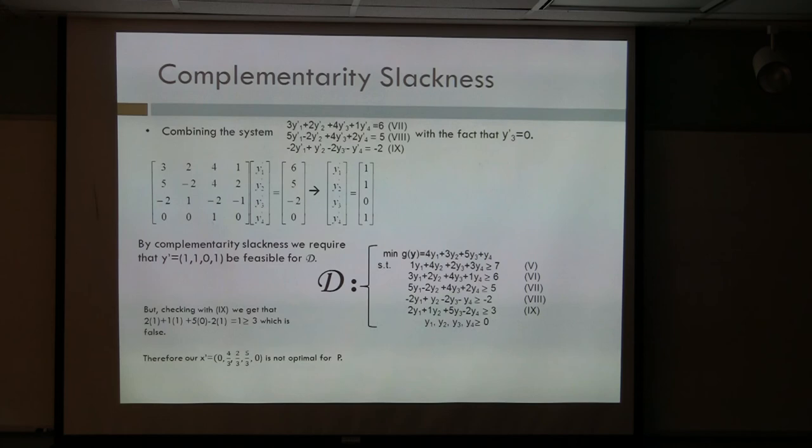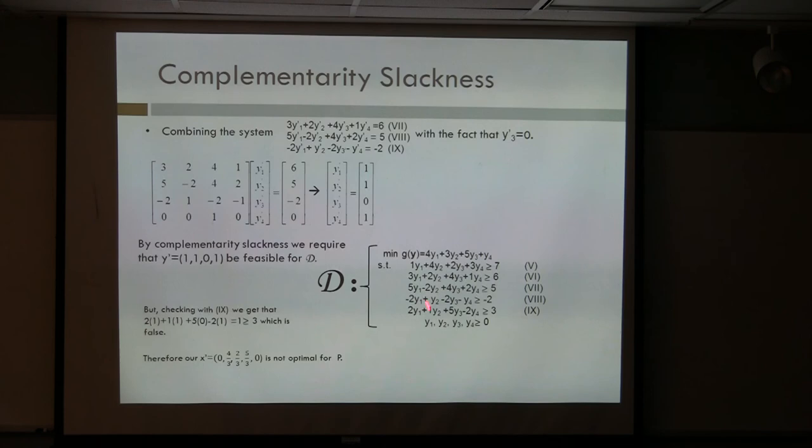Putting it all together — inequalities seven, eight, and nine with y-prime three equal to zero — we get a system, and we get an alleged optimum for the dual: one, one, zero, one. If we plug that in and try to evaluate it in the dual feasible region, we realize that we don't satisfy the ninth inequality. So this is not an optimum.